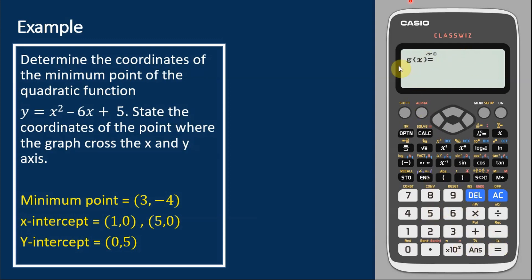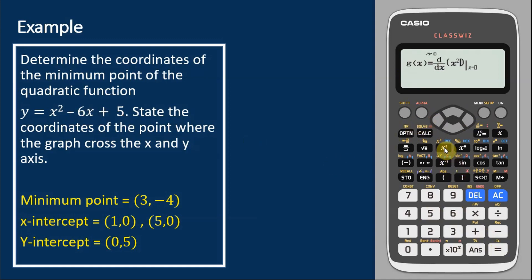Then they ask us for g(x). g(x) is our differentiation, dy/dx. In the calculator, dy/dx is accessed using Shift then the dy/dx key. Then key in the function we would like to differentiate, which is x² - 6x + 5. Then key in the value of x that we would like it to calculate — we want it for all values of x, so key in x and press equals.